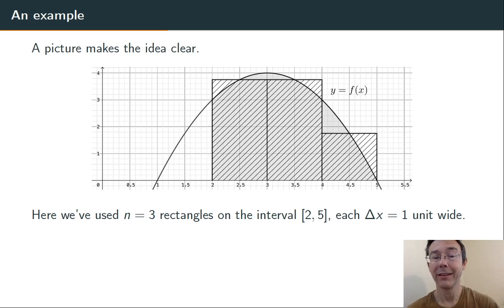The way I'm going to draw my rectangle is to take the midpoint of each of those intervals: 2 and a half, 3 and a half, and 4 and a half, take the value of the function at each of those points - f of 2 and a half, f of 3 and a half, and f of 4 and a half - and make that the height of each of the rectangles.